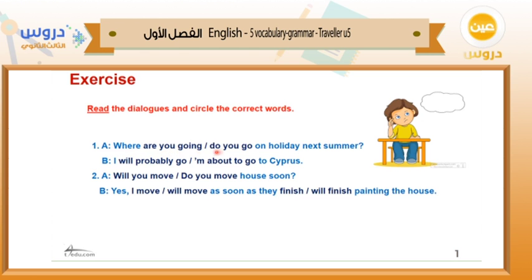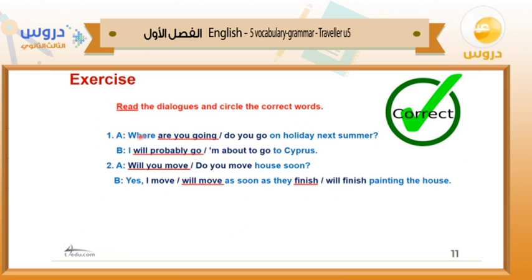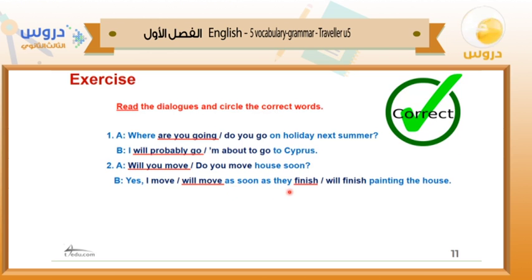Exercise: read the dialogues and circle the correct words. A: 'Where are you going on holiday next summer?' B: 'I'll probably go to Cyprus.' And: 'Will you move? How soon?' Answer: 'Yes, I'll move as soon as they finish painting the house.' Those are the correct answers.